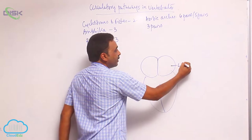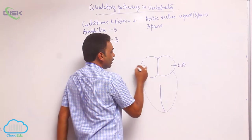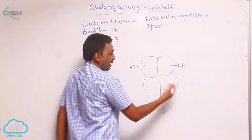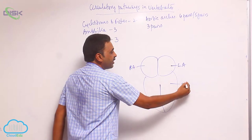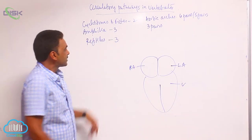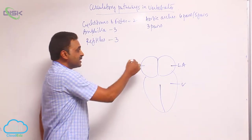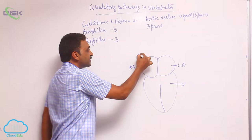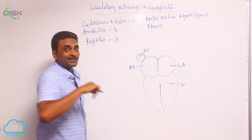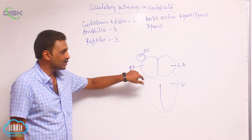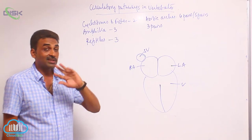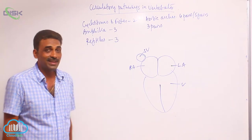As usual there is a left atrium, a right atrium, and a single ventricle is present. Sinus venosus is still present and it is the pacemaker.